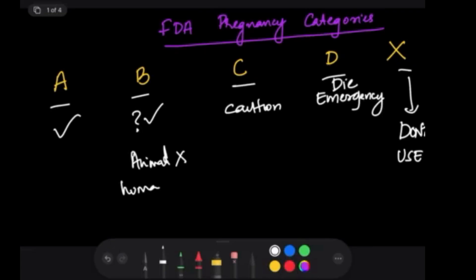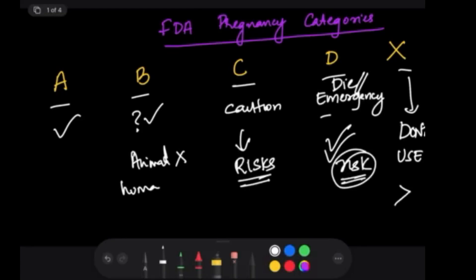C, use with caution because it has a risk. Animal studies show risk and human studies are unavailable. D is emergency or a life-threatening situation. There is positive evidence of risk, but since we need this drug to save the person, we can give it to them, but it's risky for the fetus. X is don't use it because the risk outweighs the benefits. Now these drugs: lidocaine falls under B, that is maybe acceptable. Articaine is C, use with caution. Bupivacaine is also C, use with caution.